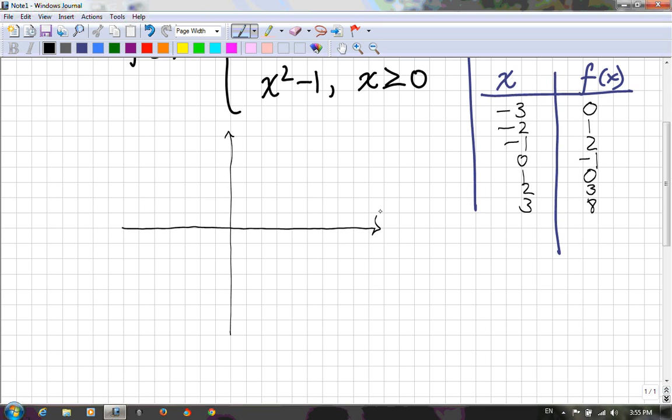Let's now plot some points. Negative 3, 0 is there. Negative 2, 1 is here. Negative 1, 2 is here.